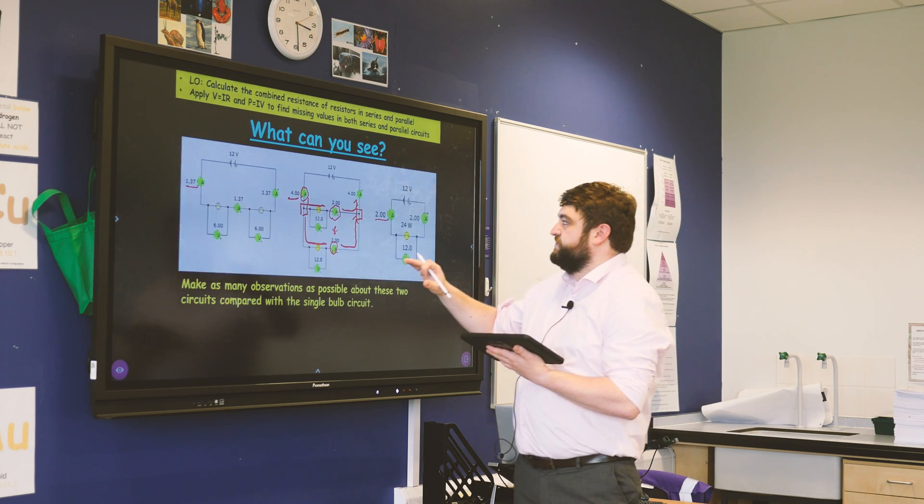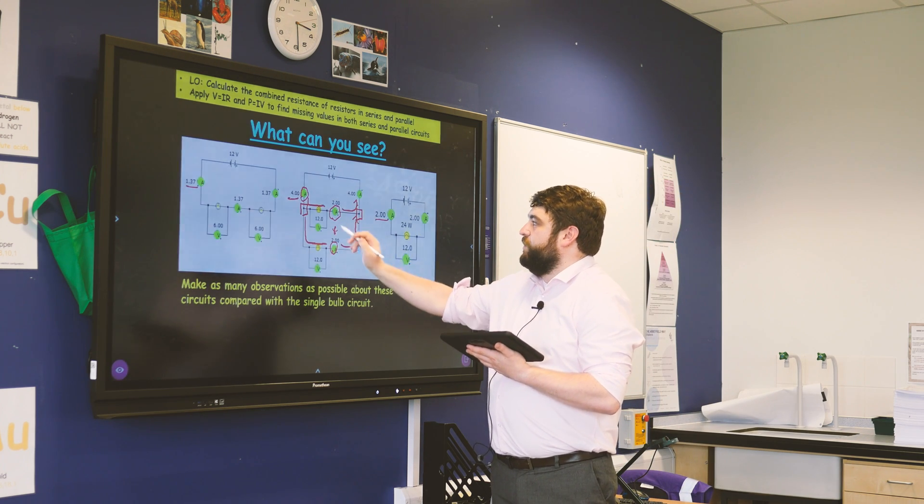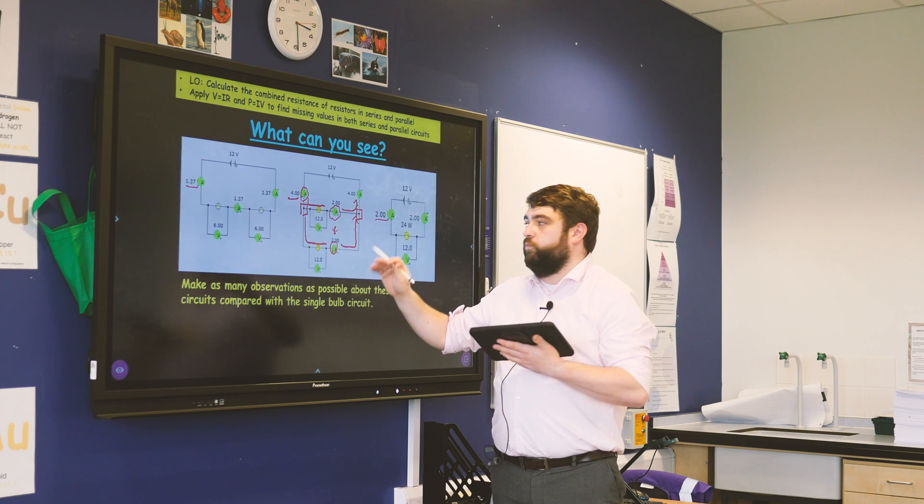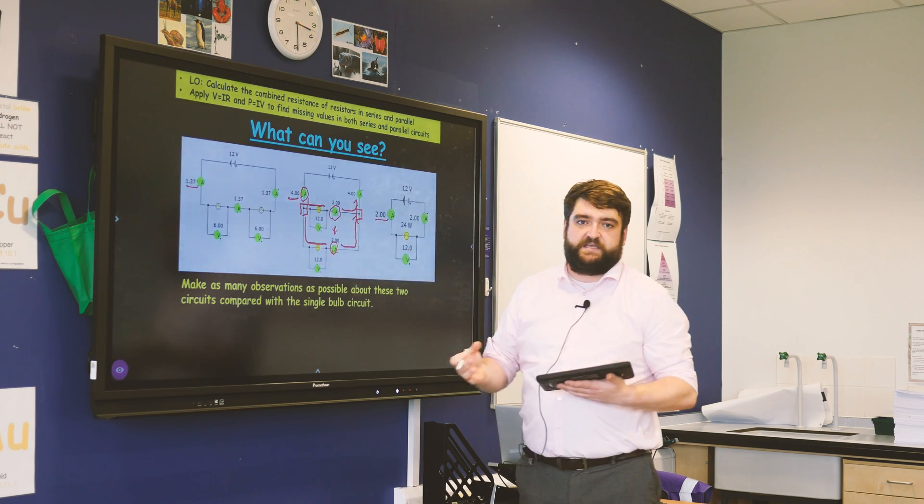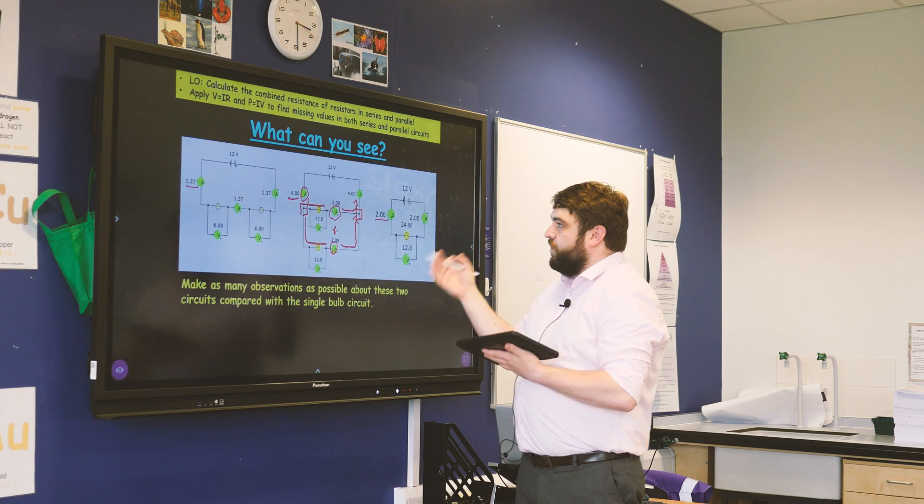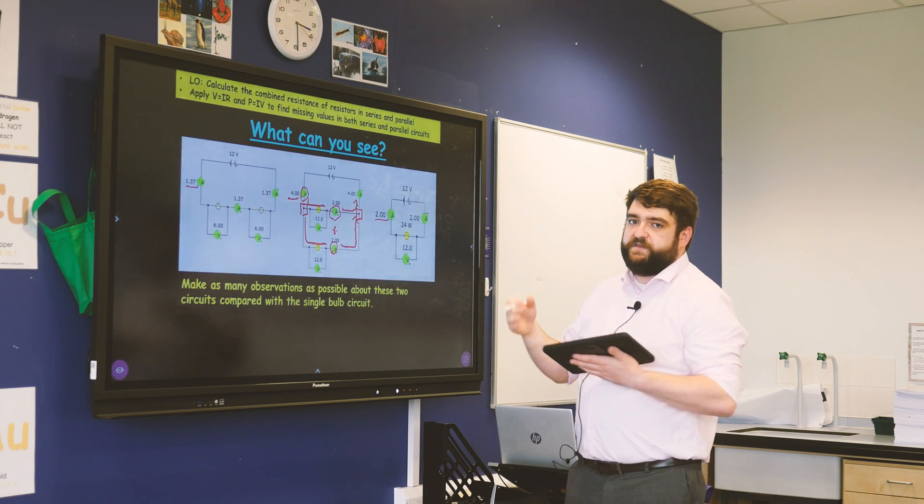In the example here we were able to go over, well actually where is the current at the junctions breaking off, why do we see a pattern between the two ammeters at particular points. It highlights it better for the students; it's just something which is more visual.